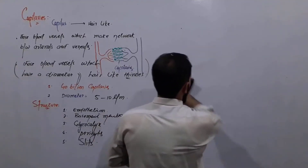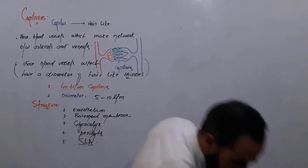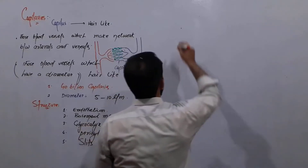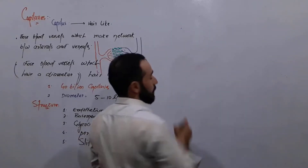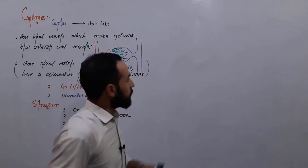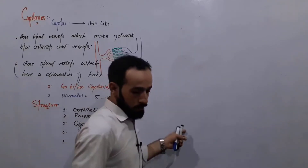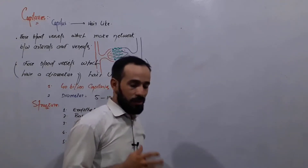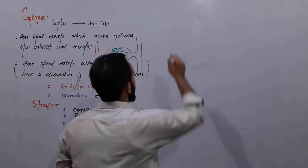Let's discuss the types of capillaries in our body. We have three types of capillaries. Let me write each one and we will see them in a sketch that we have brought to show you.